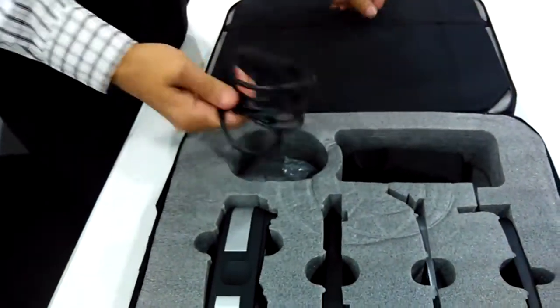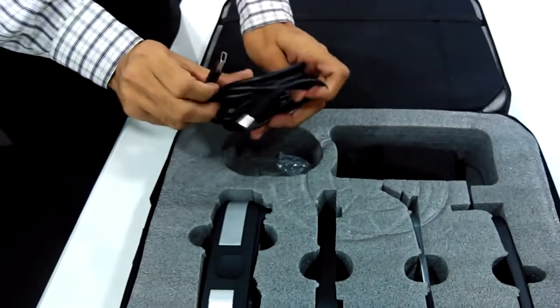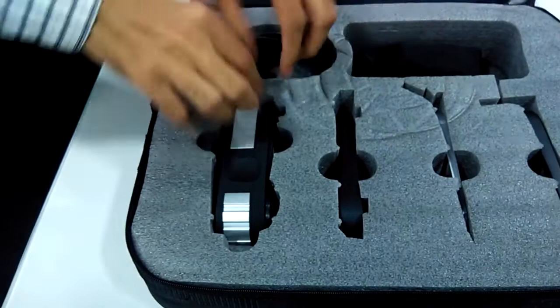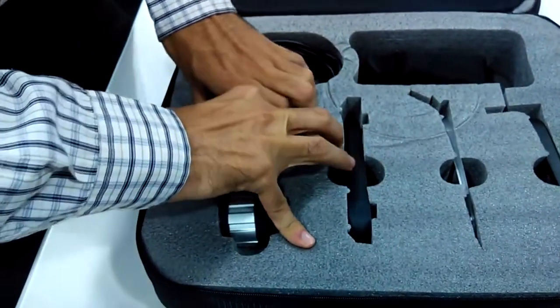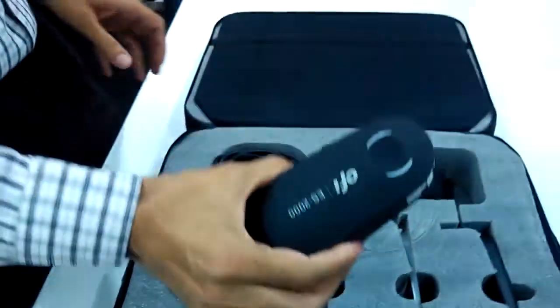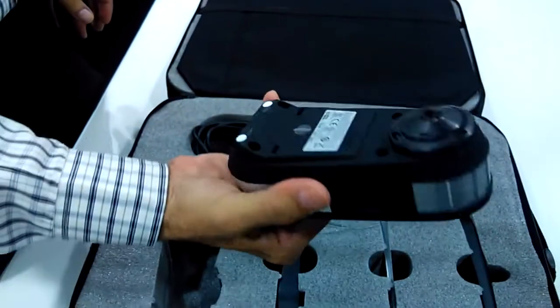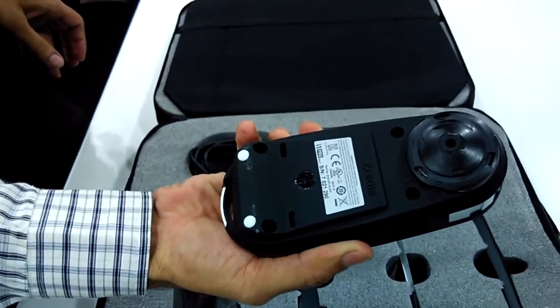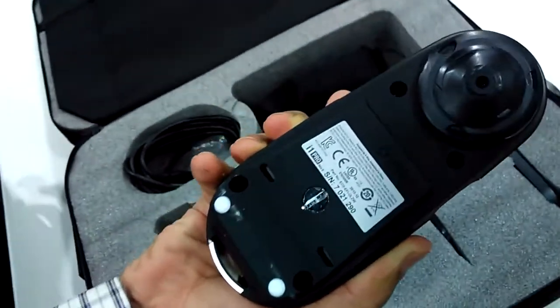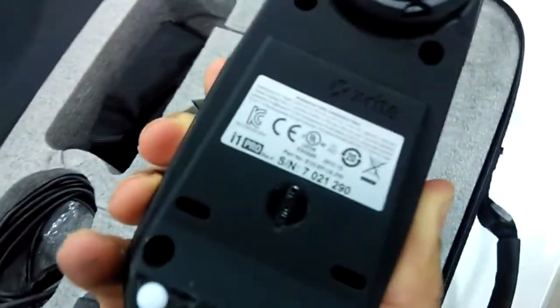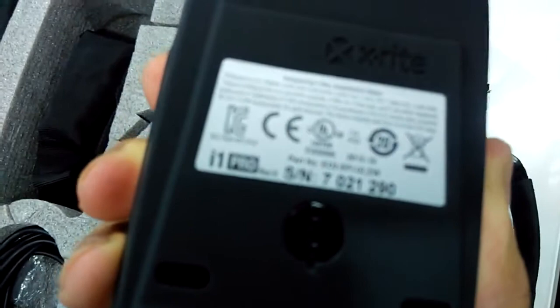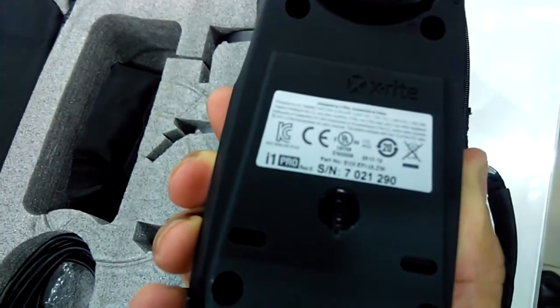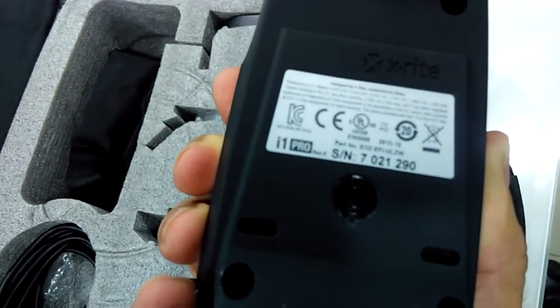The spectrophotometer is used for calibrating monitors and devices. Here you can see the spectrophotometer. It's an X-Rite OEM called the i1 Pro.